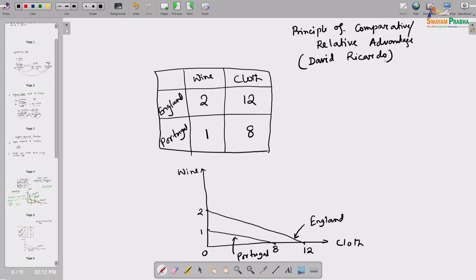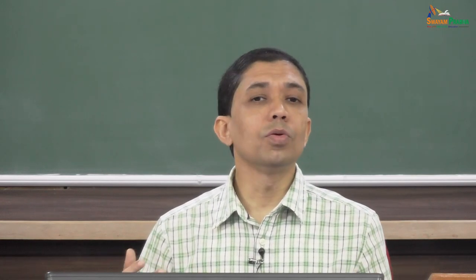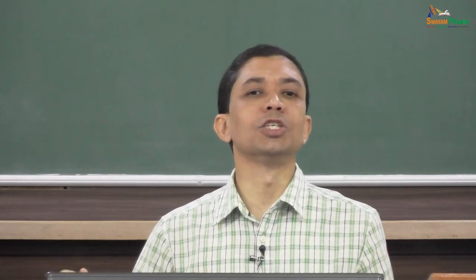Look at the opportunity cost of wine for England versus the opportunity cost of wine for Portugal. When we introduced the concept of opportunity cost in the last lecture - for example, a farmer with one piece of land can produce either rice or jute - the opportunity cost of rice is how much jute he loses by not cultivating it. In this case, 2 units of wine's opportunity cost is 12 units of cloth.